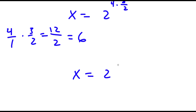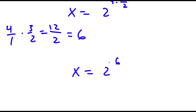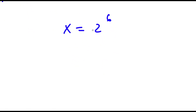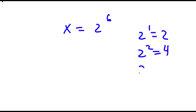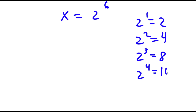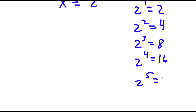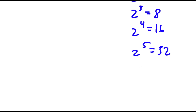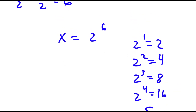So now I have x is equal to 2 to the power of 6. And 2 to the power of 6 — well, 2^1 = 2, 2^2 = 4, 2^3 = 8, 2^4 = 16, 2^5 = 32. Notice how it doubles every time. So 2 to the power of 6 would be double 32, which equals 64. So x is equal to 64.